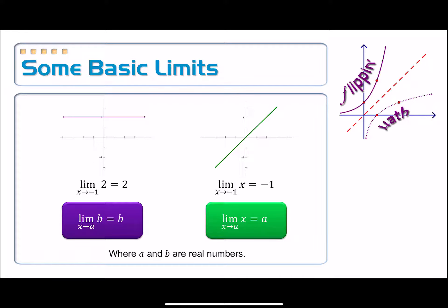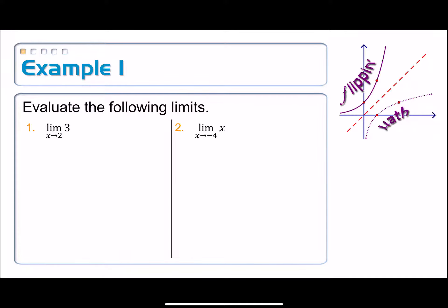So, let's practice these highly complicated limits here on example 1. Evaluate the following limits. And we have on number 1, the limit as x approaches 2 of 3. We have a constant function of 3. It doesn't even matter what we're approaching. The value of this limit will, no matter what, be equal to 3.